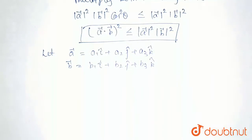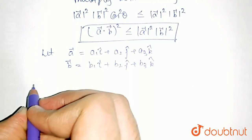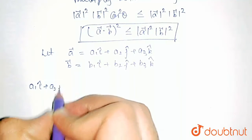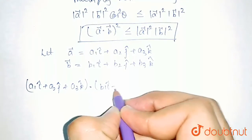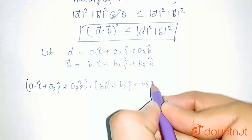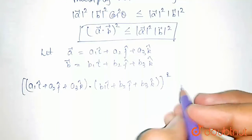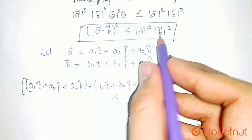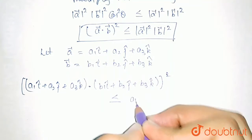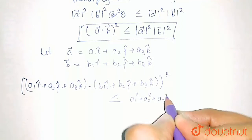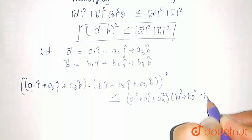Now, let us put the values of A and B in this equation. Substituting those values, we will get A1 i plus A2 j plus A3 k dot with B vector, that is B1 i plus B2 j plus B3 k, whole square, less than or equal to mod A squared into mod B squared. Mod A squared is A1 squared plus A2 squared plus A3 squared, and mod B squared is B1 squared plus B2 squared plus B3 squared.